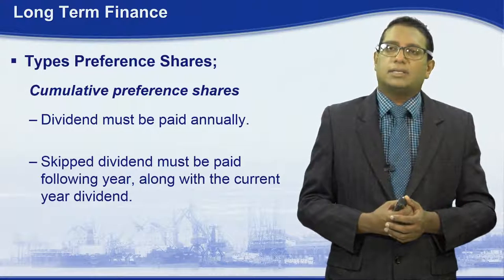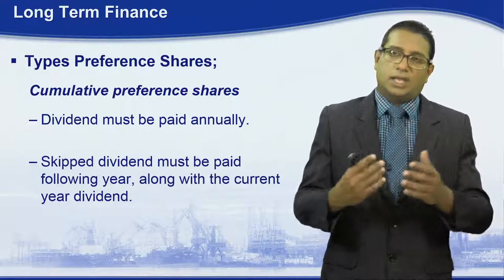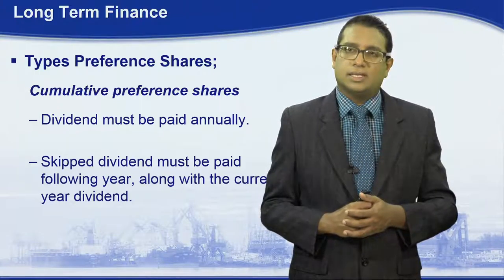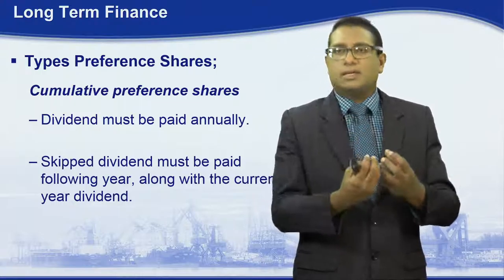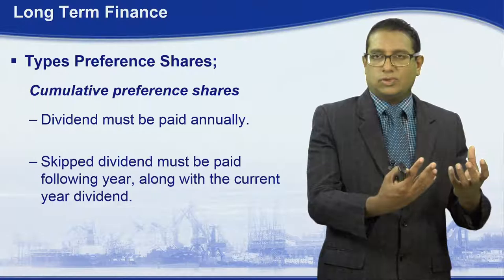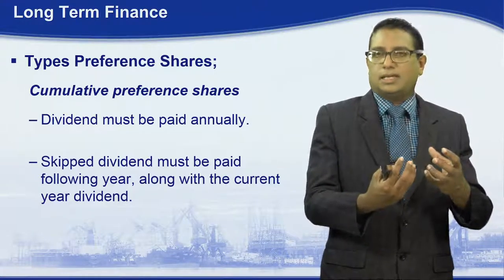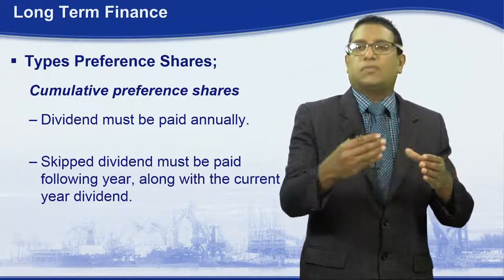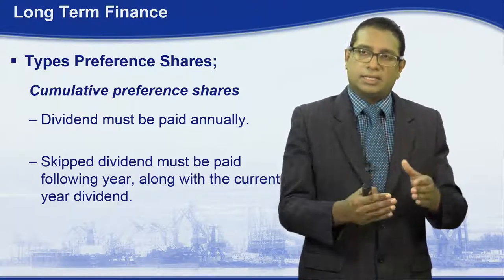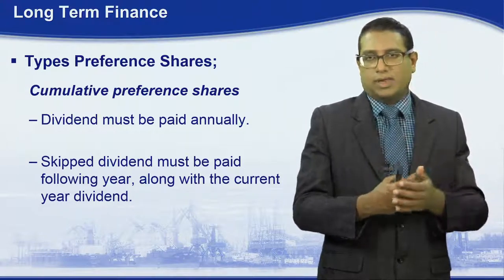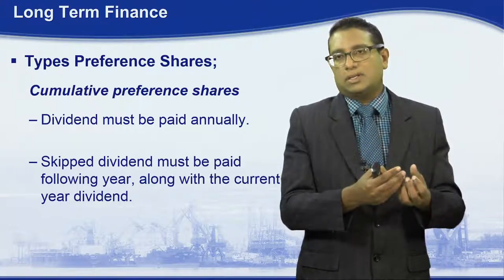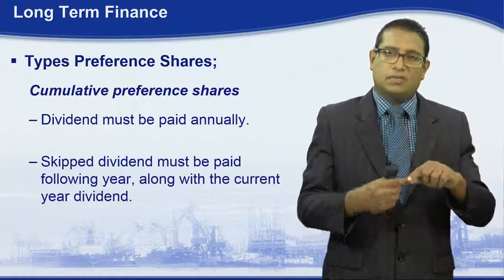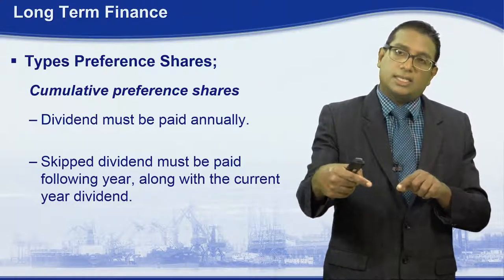Let us discuss the types of preference shares. The first type is cumulative preference shares. These receive dividends on an annual basis. If there is a skipping of dividend payments for a particular year due to losses or any other factors, that dividend amount is carried through to the next financial year. In the next financial year, the skipped dividend will be paid along with the next year's dividend payment.